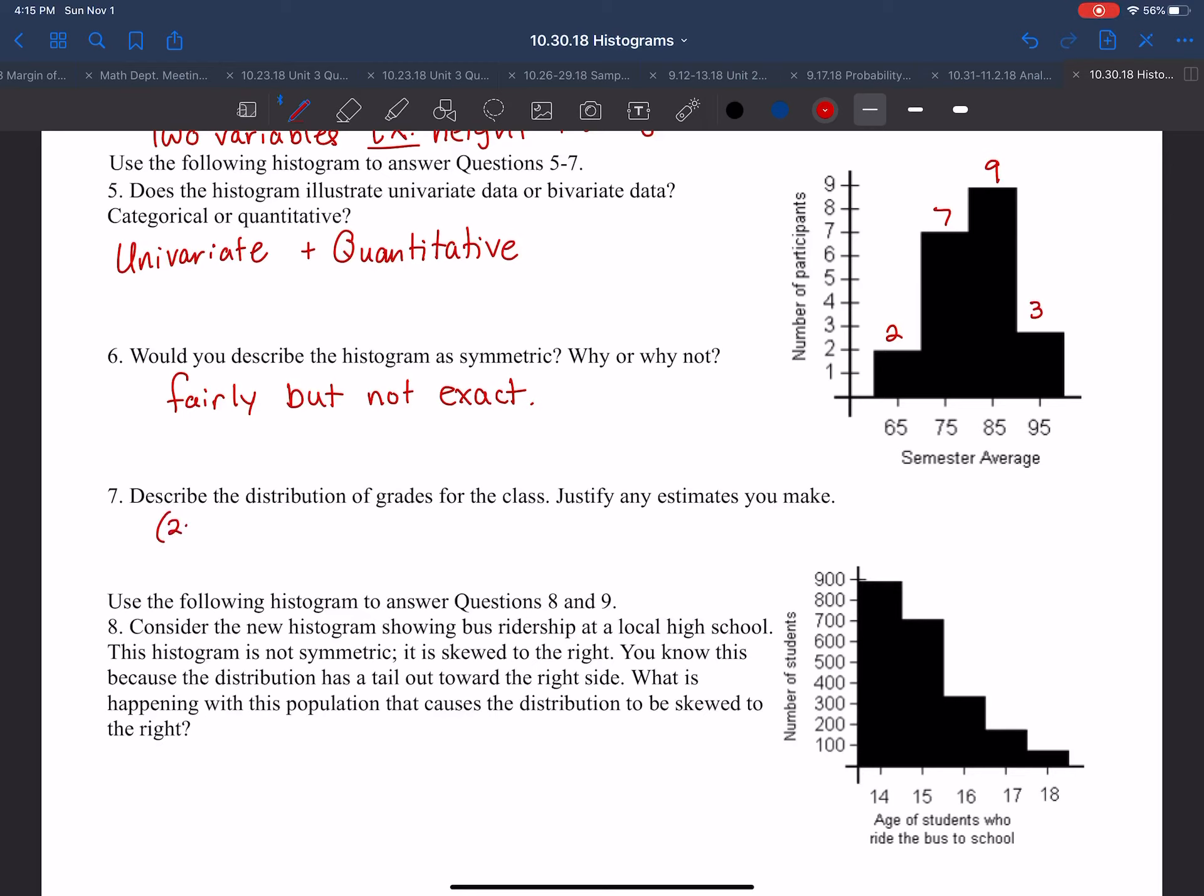I can say 2 times 65 plus 7 times 75 plus 9 times 85 plus 3 times 95. In total, I have 21 participants. And if I put this in my calculator, my average would be 81.2.